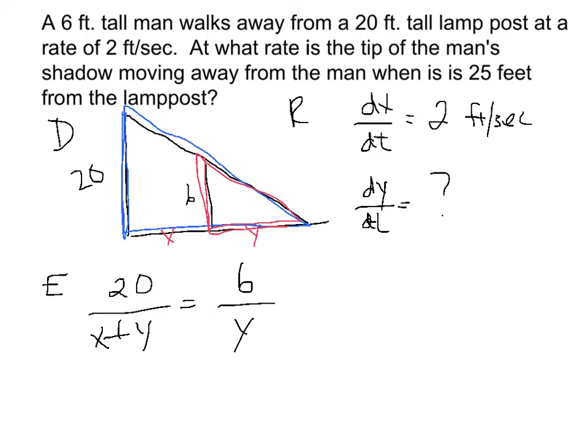You know, do a little manipulation here, maybe a little cross multiplying. We've got 20y equals 6x plus 6y. So maybe get the y's together. We've got 14y equals 6x. Divide both sides by 14. And now you have a pretty darn nice equation. It's just y equals 6x/14.